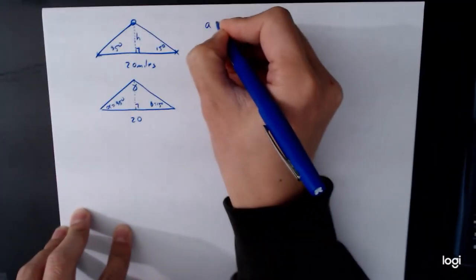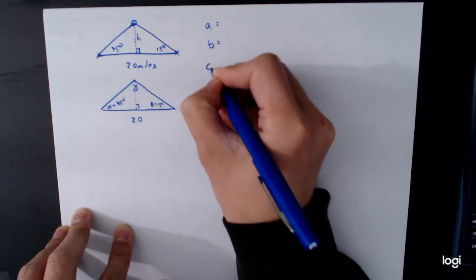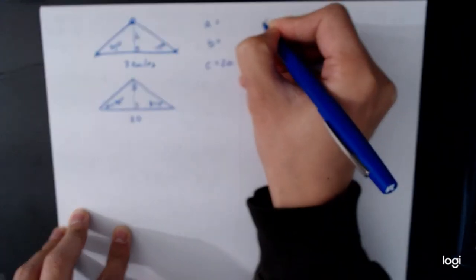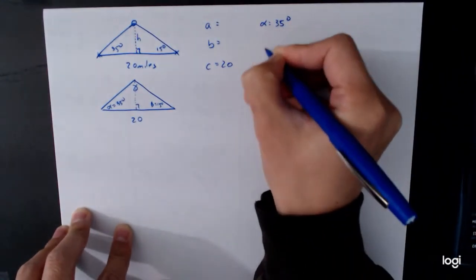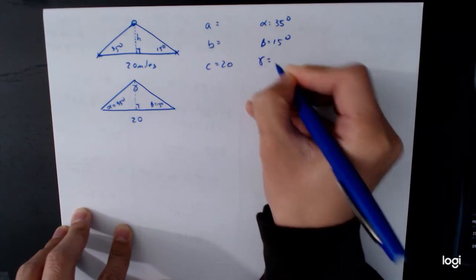And so we have a is not known, b is not known, c is 20, alpha is known, beta is known, and gamma is not known.